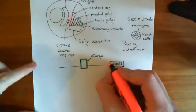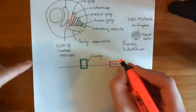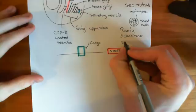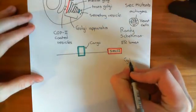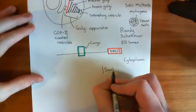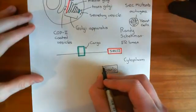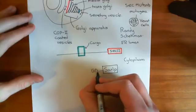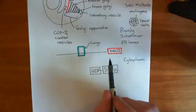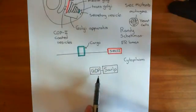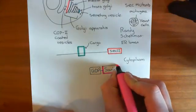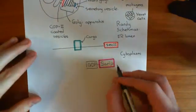So that's where SEC comes from. SEC12, then, is going to be involved in recruiting another protein to the membrane of the endoplasmic reticulum. In the cytoplasm, there is a protein known as SAR1P. When SAR1P is in its inactive state, it has guanosine diphosphate (GDP) bound to it. SEC12 is capable of grabbing a SAR1P protein, removing the GDP, and binding a GTP molecule from the cytoplasm onto the SAR1P protein in place of the GDP.